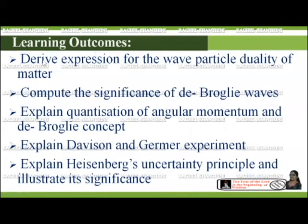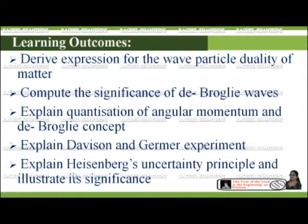Learning outcomes. At the end of this session you will be able to derive the expression for wave-particle duality of matter, compute the significance of de Broglie's wave, explain quantization of angular momentum and de Broglie's concept, explain the Davisson and Germer experiment, and explain Heisenberg's uncertainty principle and illustrate its significance.